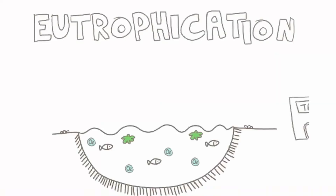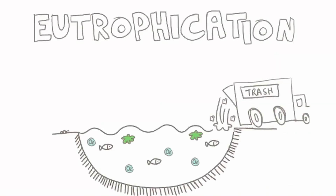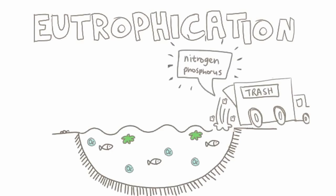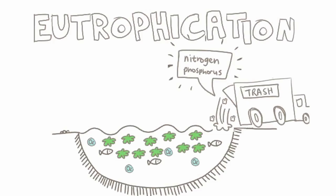Eutrophication is a big word that just means adding a lot of nutrients good for growing, like nitrogen and phosphorus, to a lake or a river, usually by pollution. That causes a lot of plants and cyanobacteria to bloom.